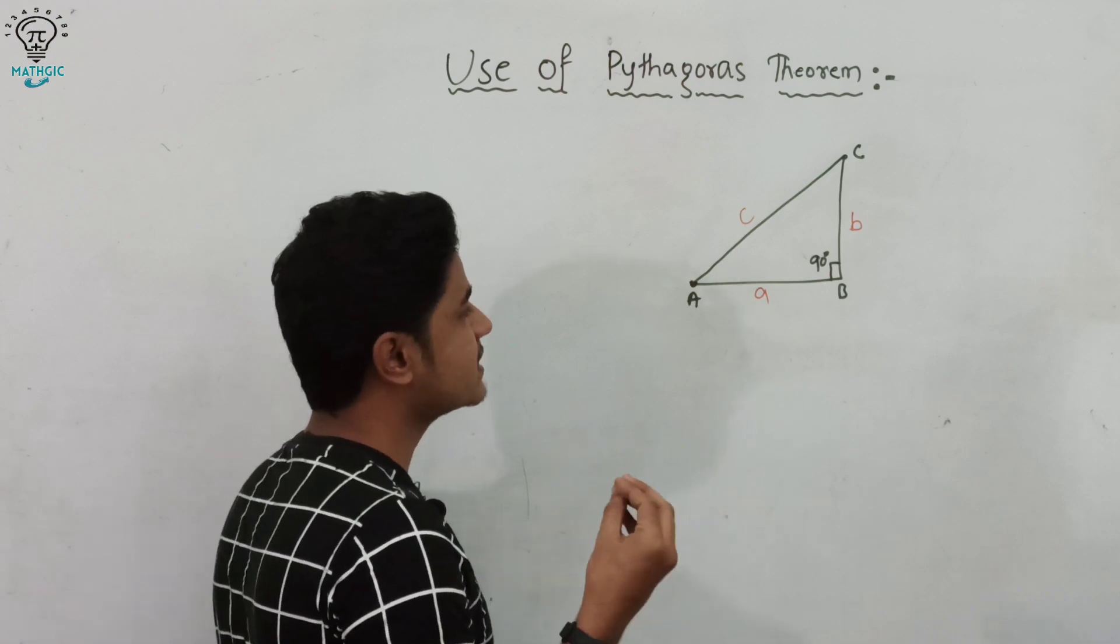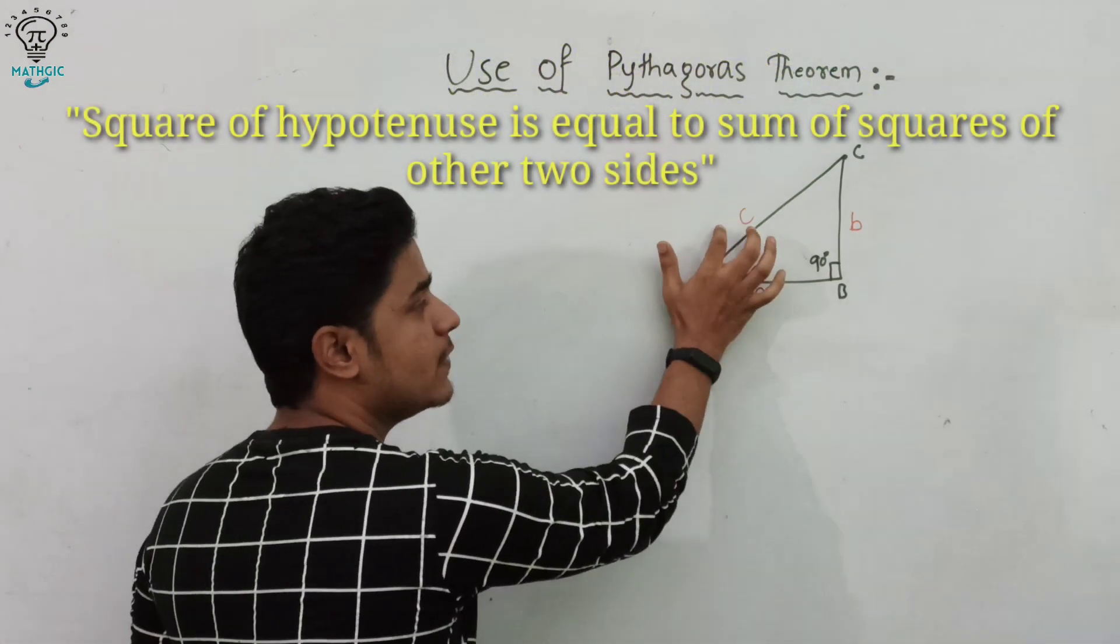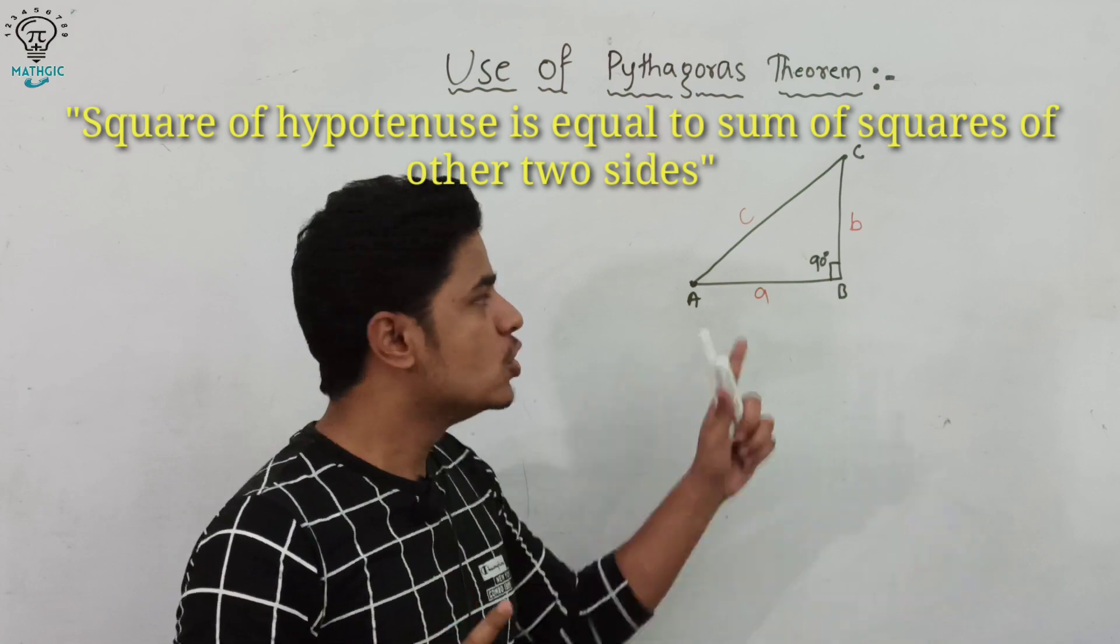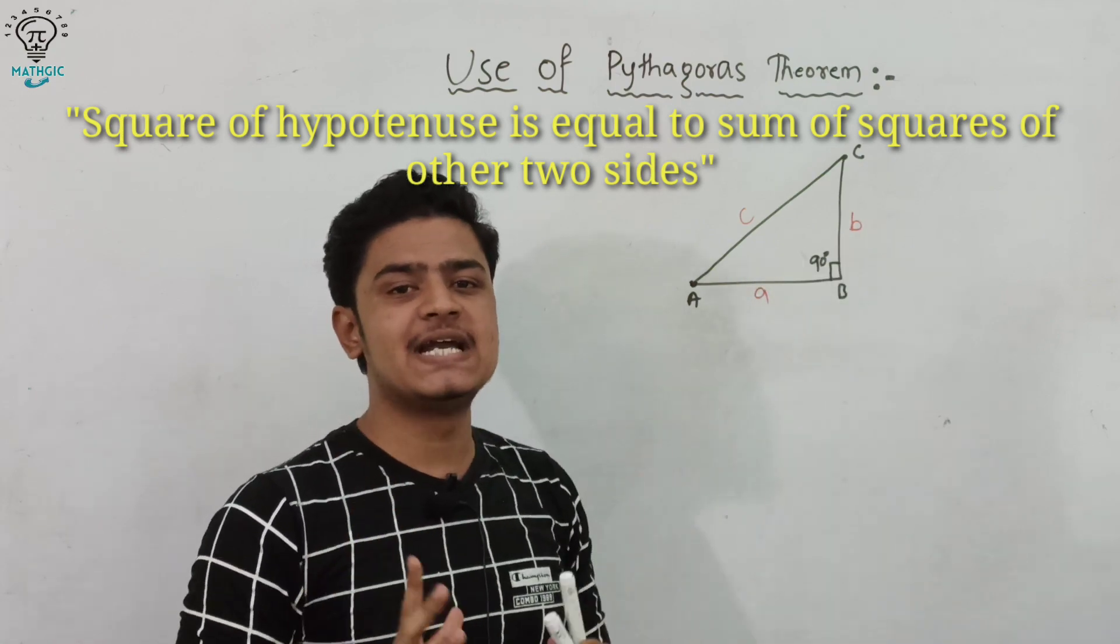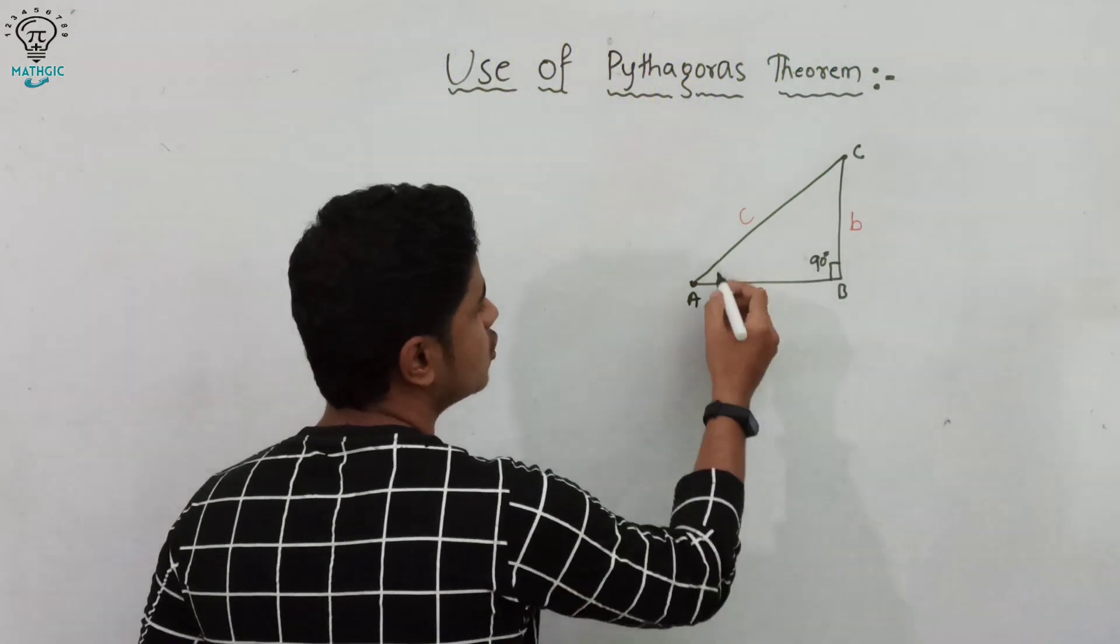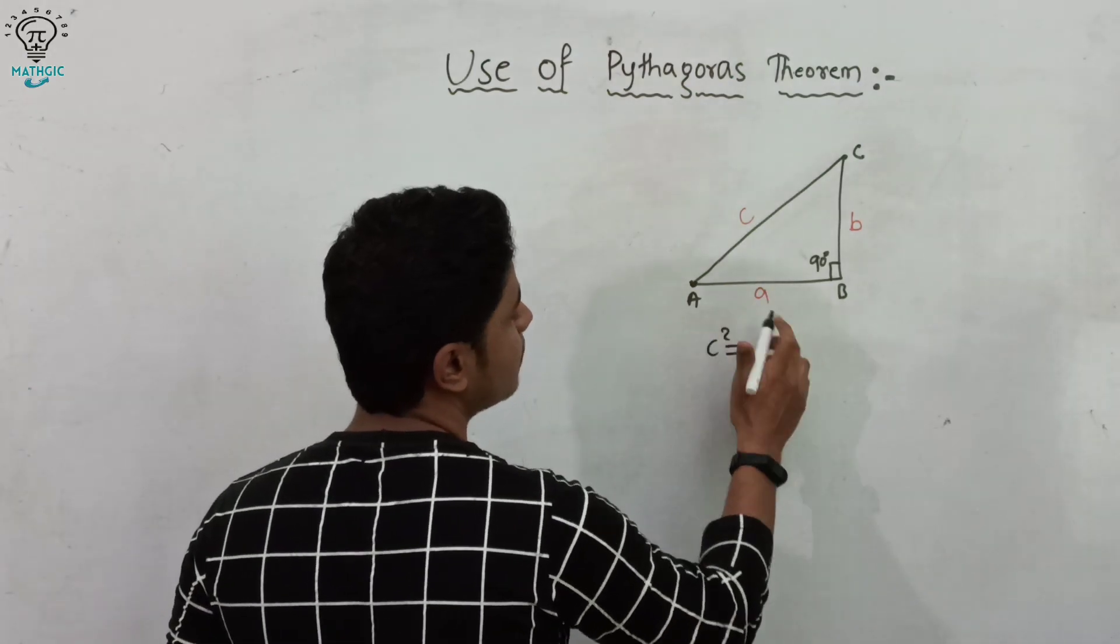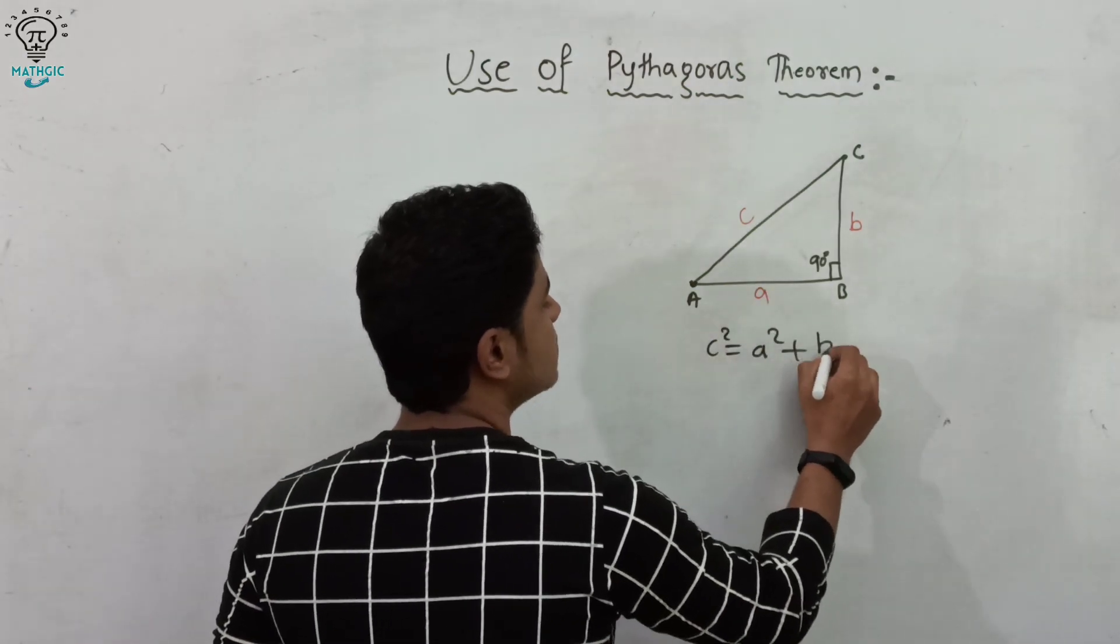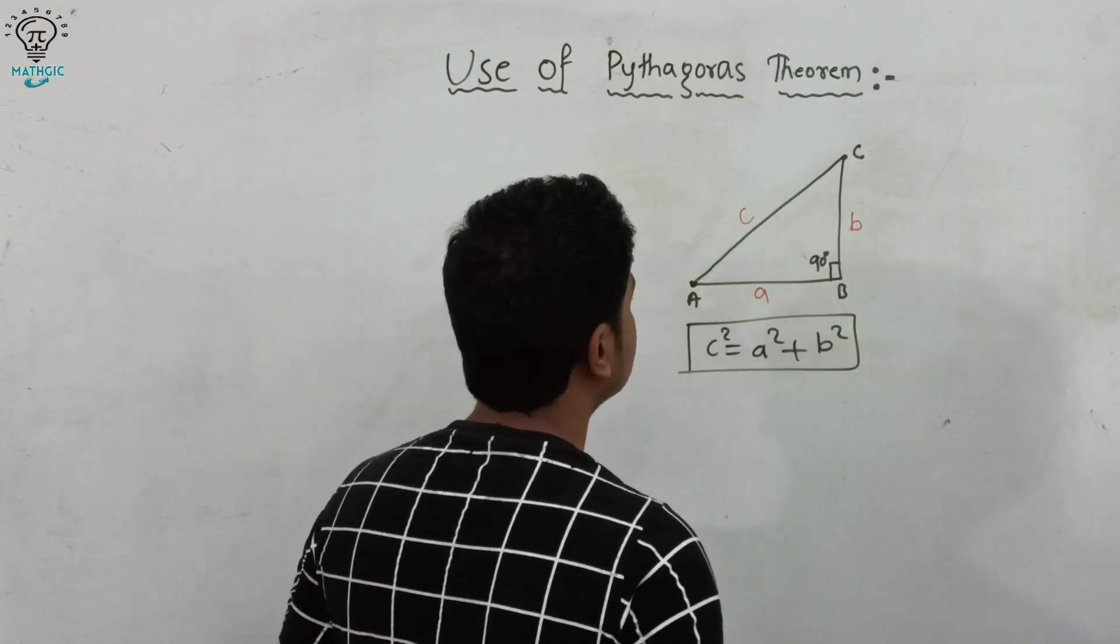Pythagorean theorem says square on the hypotenuse is equal to sum of squares of two other sides, so it means c² = a² + b². So this is the statement of Pythagorean theorem.